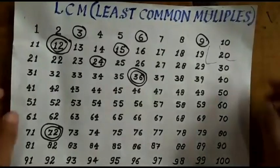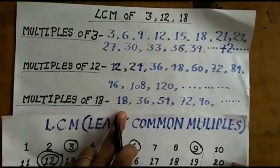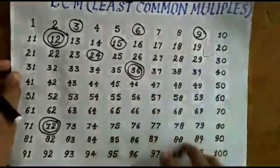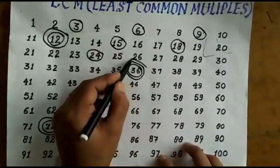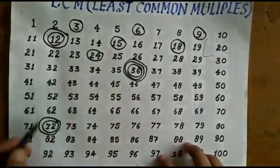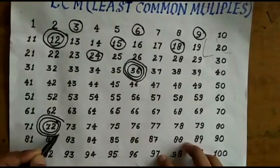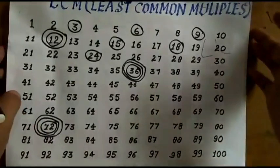And next we will select multiples of 18 starting from 18. So 18, 36 also, 72 and next etc and so on.